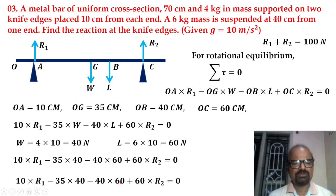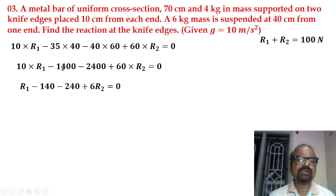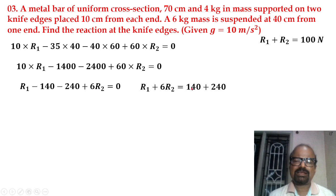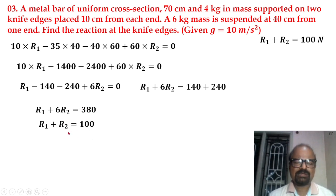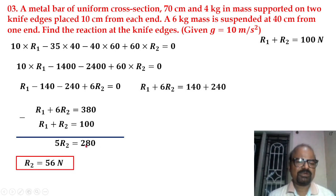Simplifying the torque equation and solving for R1, we obtain R1 + 6R2 = 388. Combined with R1 + R2 = 100, subtracting gives 5R2 = 280, so R2 = 56 N. Substituting back into R1 + R2 = 100 gives R1 = 44 N.